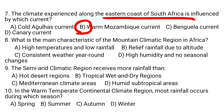What is the main characteristic of the mountain climate region in Africa? High temperatures and low rainfall — no. At high altitude, rainfall is also high and temperature is low. Relief rainfall due to altitude: as altitude increases, temperature decreases and rainfall increases. So the correct answer is B.